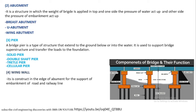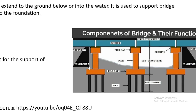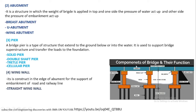Wing wall is constructed at the edge of the abutment to support the embankment of the road and railway line. When water comes to the supporting area of the embankment, scouring will occur, so we use a wing wall to stop the water from eroding the embankment. The types of wing wall are straight wing wall, splayed wing wall, and return wing wall.